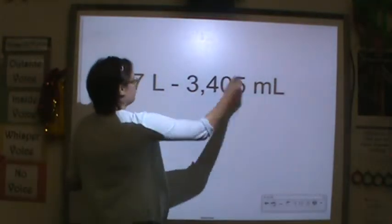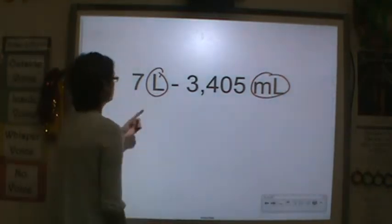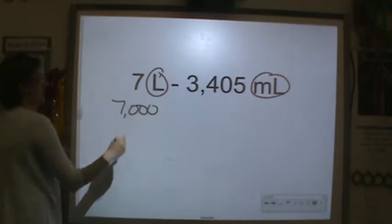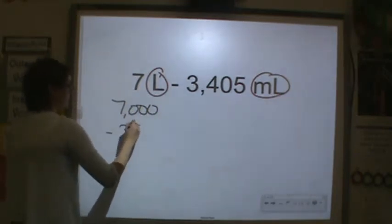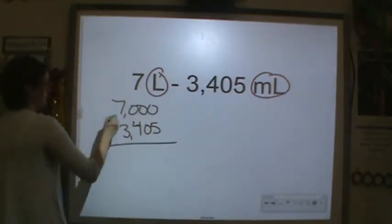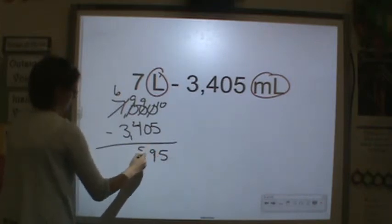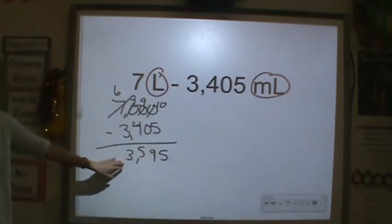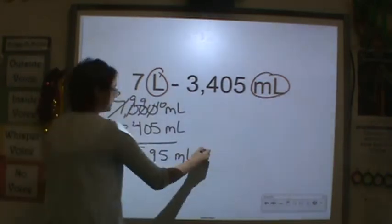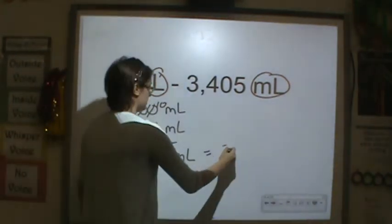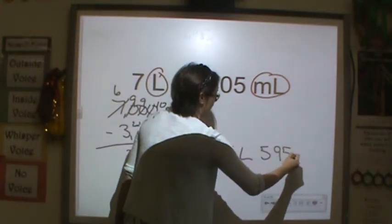Seven liters minus three thousand four hundred five milliliters — we can't do that because the units are not the same. So let's first convert: seven thousand milliliters minus three thousand four hundred five milliliters. We're going to have to do some regrouping. That equals three thousand five hundred ninety-five milliliters. We can also convert this into liters: three liters and five hundred ninety-five milliliters.